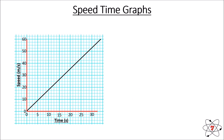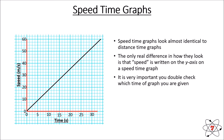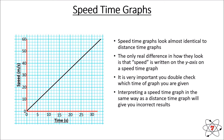A speed-time graph is a graph that compares the speed of an object against the time that it's been travelling. The time always goes along the x-axis and the speed always goes along the y-axis. Speed-time graphs look almost identical to distance-time graphs — the only real difference is that you'll see speed written on the y-axis and not distance. Whenever you get a graph showing motion, check the y-axis to see if it's speed or distance, because it's incredibly important that you double check this. If you interpret a speed-time graph the same way as a distance-time graph, you will make mistakes.